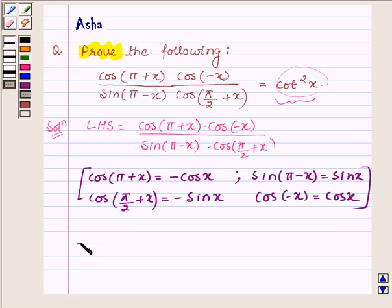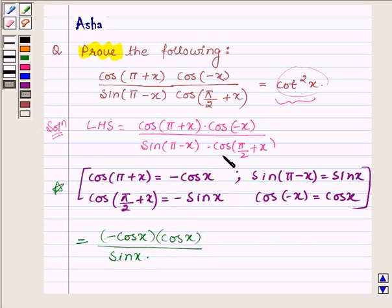So the LHS can further be written as by using these identities: cos(π + x) is -cos(x), cos(-x) is cos(x), and cos(π/2 + x) is -sin(x).